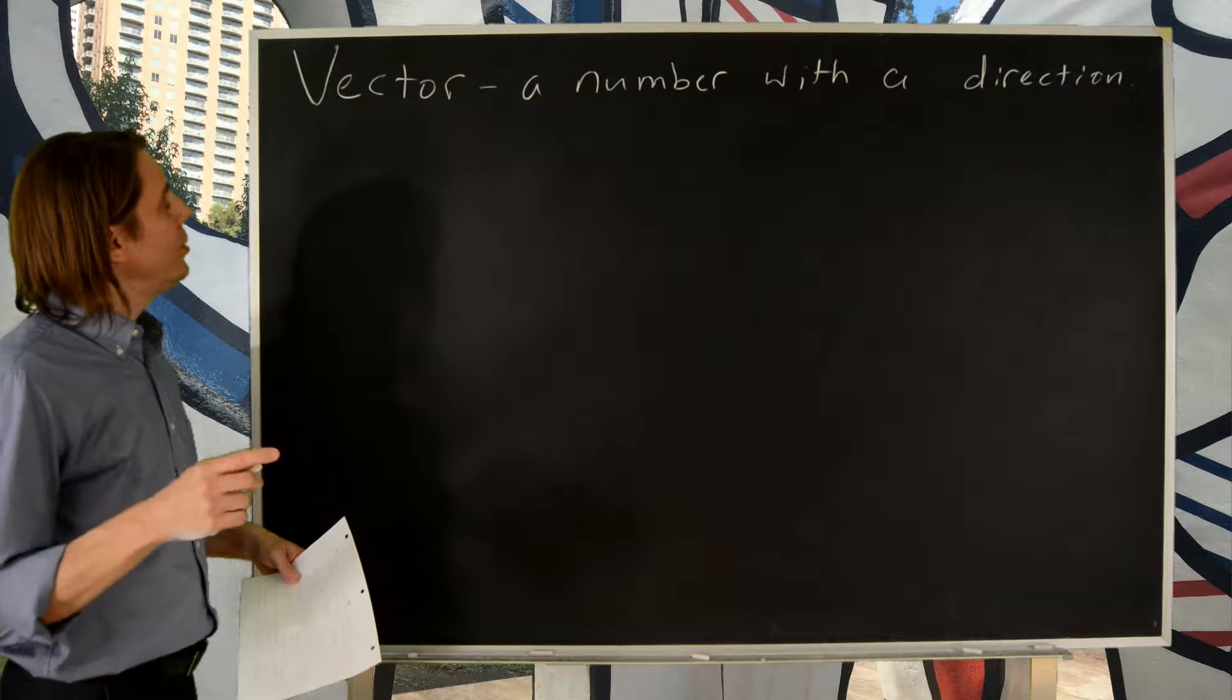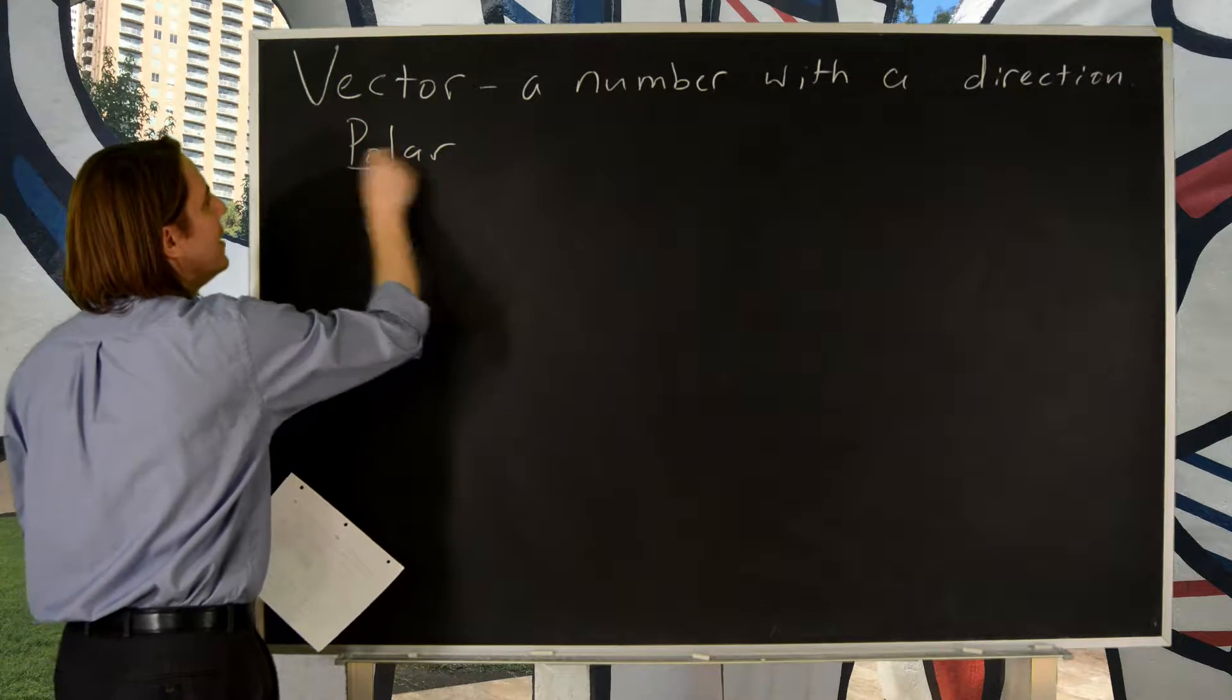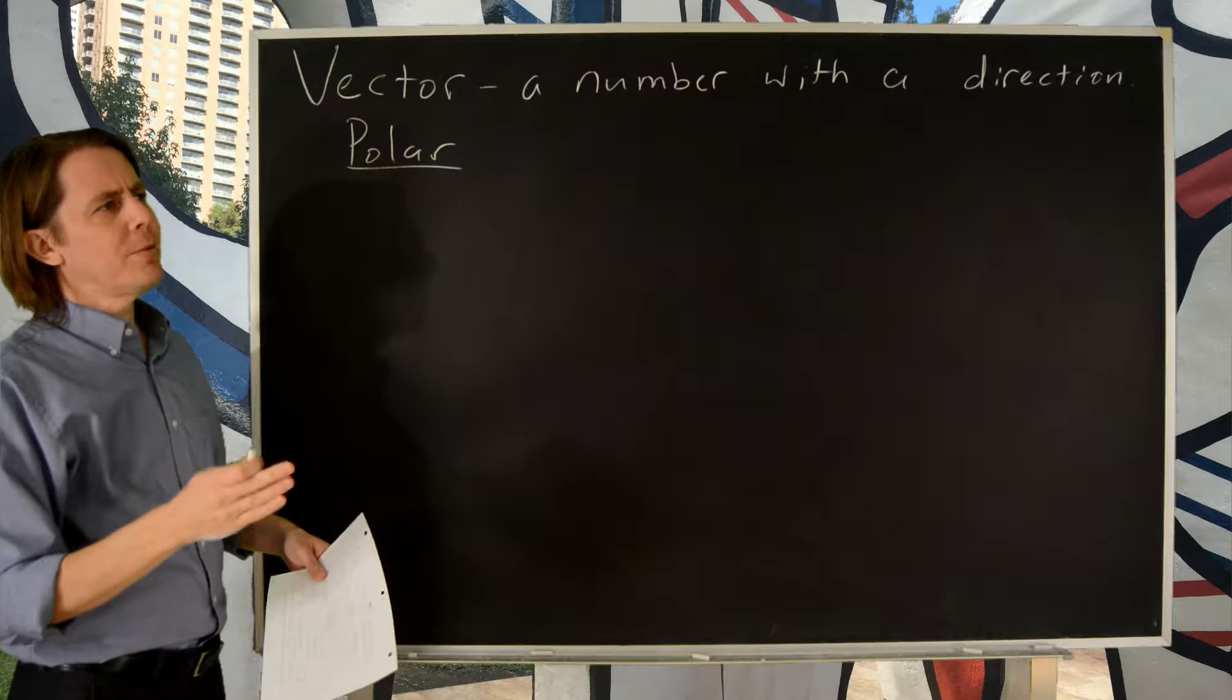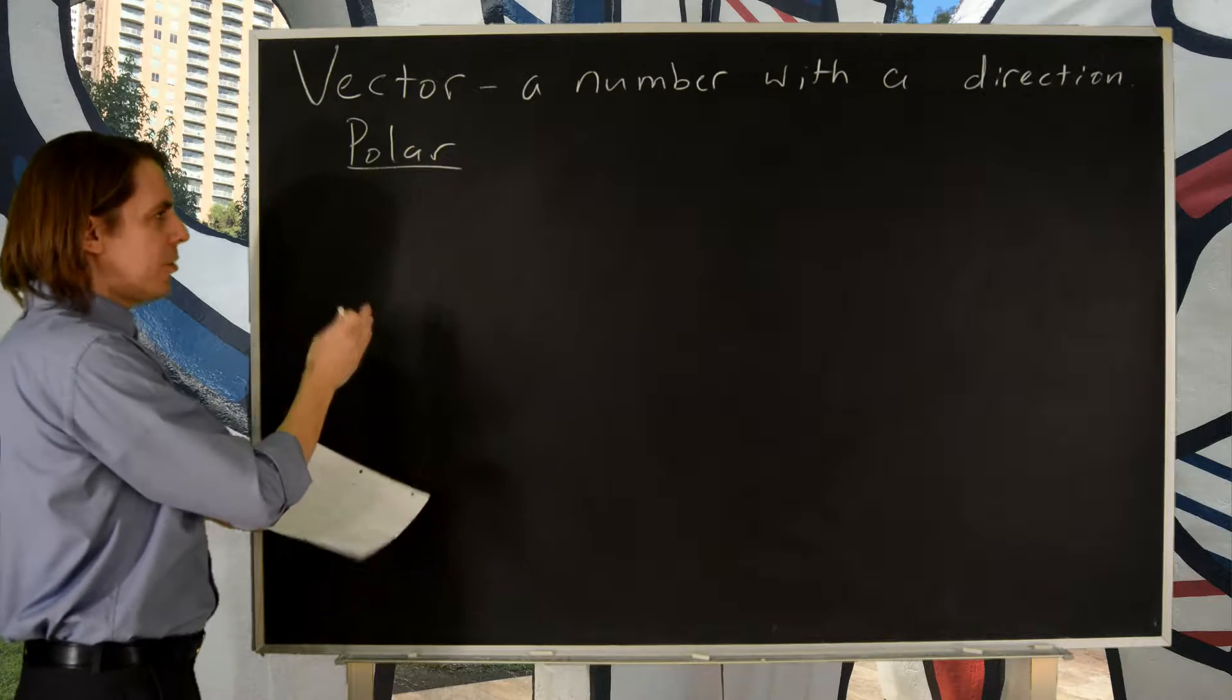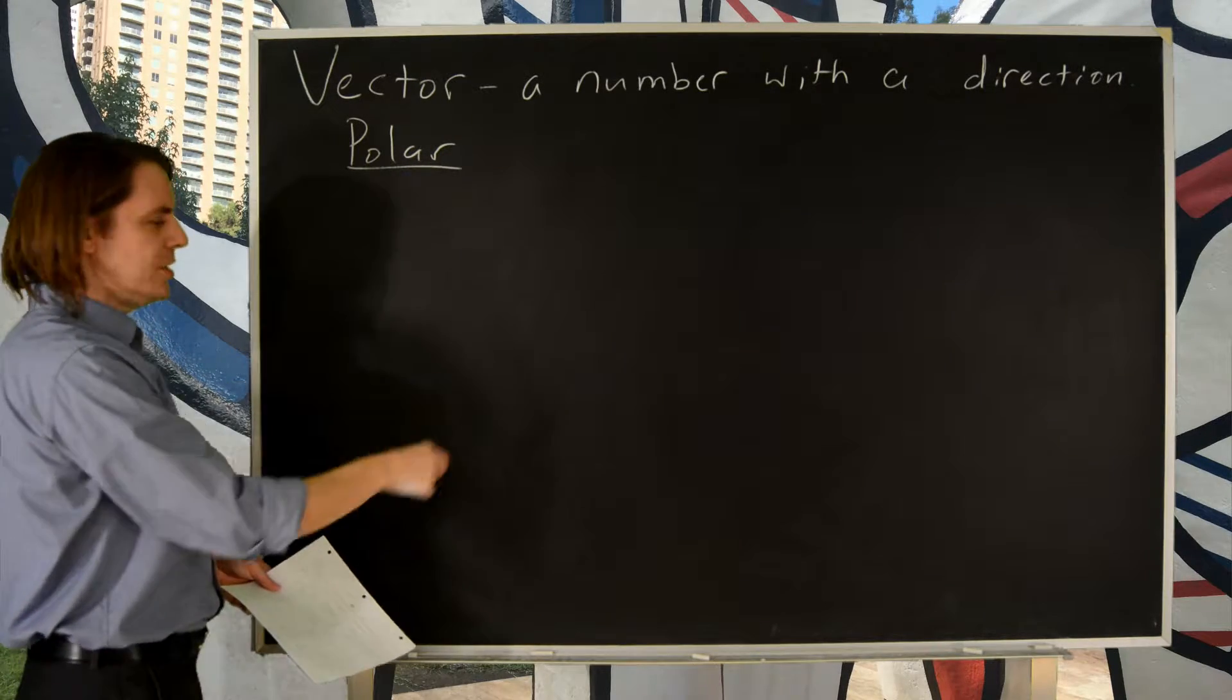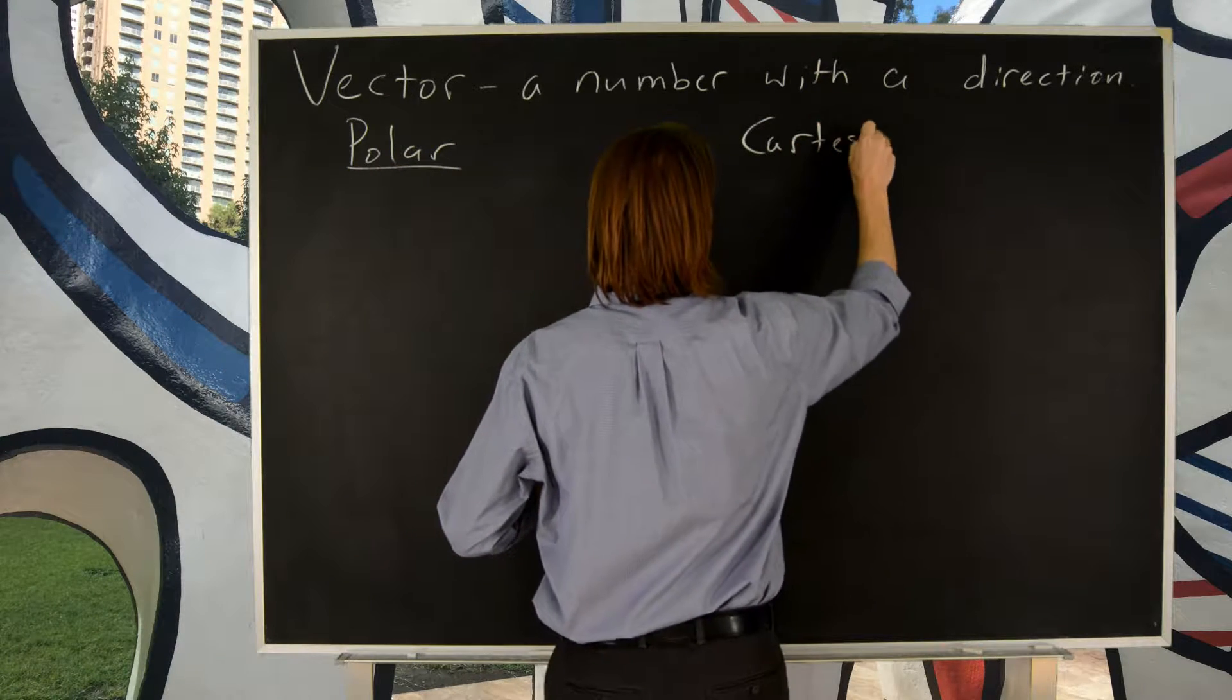You may have noticed vectors are described two ways. Sometimes they're described as a length and a direction, and then sometimes they're described in terms of components. So what's really happening is they're being described in two different coordinate systems. There's two ways to describe a position in 2D: There's Polar coordinates and there is Cartesian coordinates.